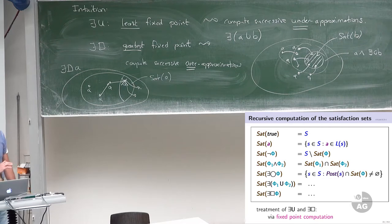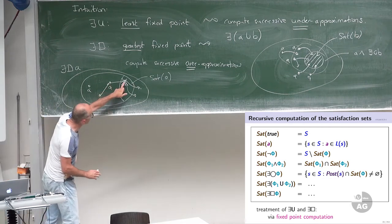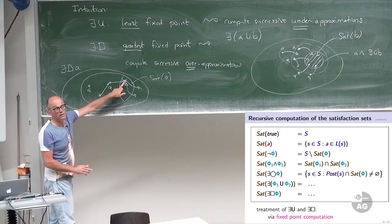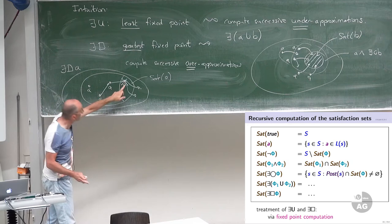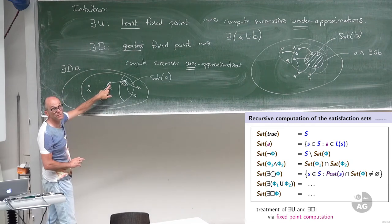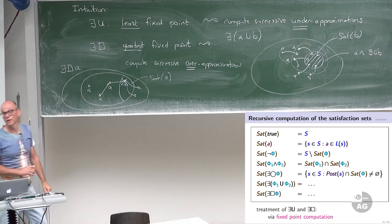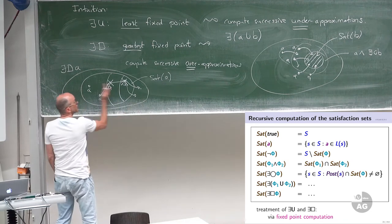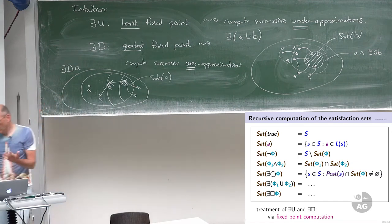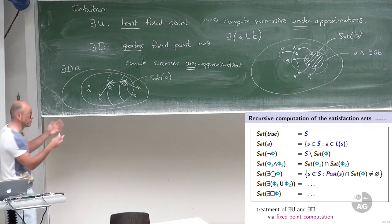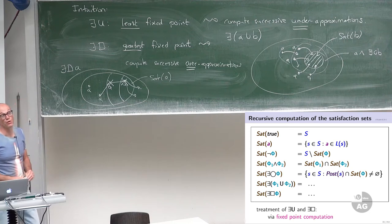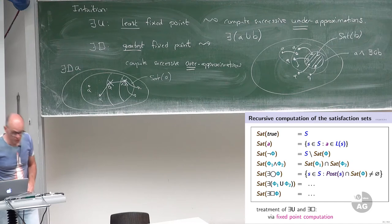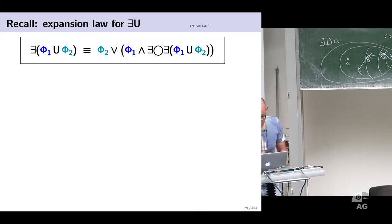The smallest set satisfying the fixed-point equation must include all the phi2 states, and if you have a phi1 state with a direct successor already in the set, that state must also be a member. The set of states satisfying existential phi1 until phi2 is the smallest T such that: (1) sat(phi2) is included in T, and (2) if s is a phi1 state with a direct successor into T, then s belongs to T. That this set is correct follows directly from the expansion law.